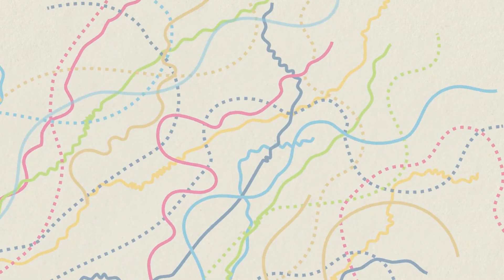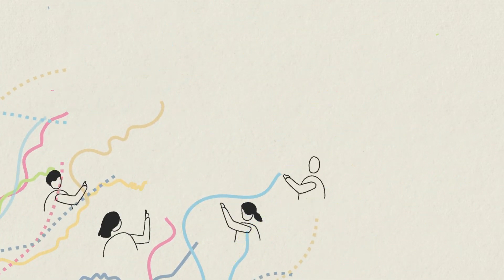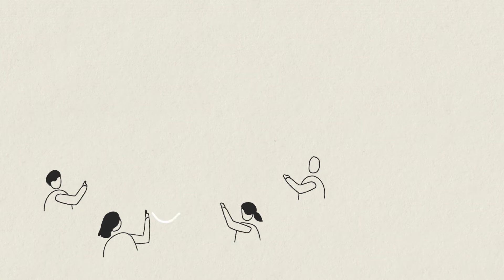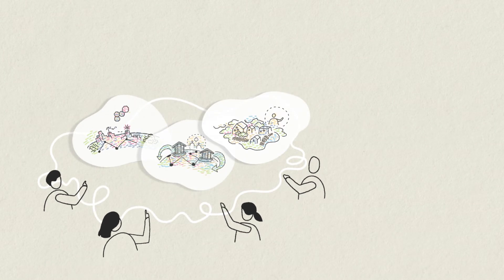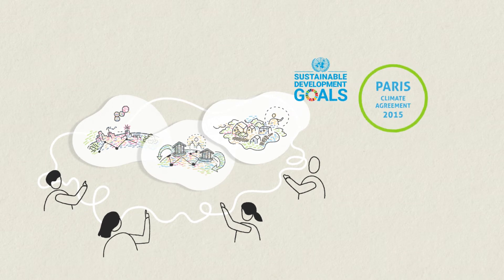The SHAPE project has, together with stakeholders involved in global sustainability, co-created scenario narratives that help describe alternative pathways to achieve the sustainable development goals and meet the Paris Climate Agreement targets.